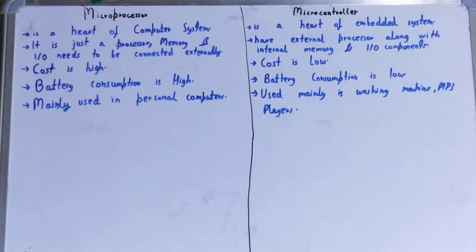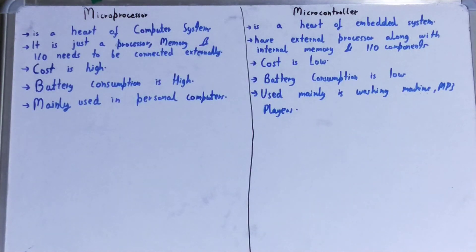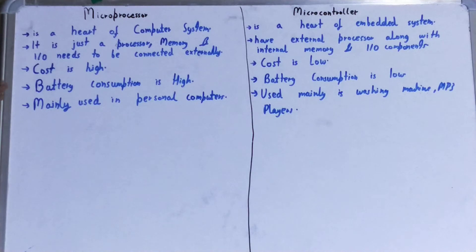Next, the cost of a microprocessor is high because they are very powerful, do multitasking, and are designed for big systems like computers, laptops, and mobile phones which need a lot of calculation and many processes to be executed. Whereas the cost of a microcontroller is very low because it is generally designed for one or two tasks, so it doesn't need a lot to build.